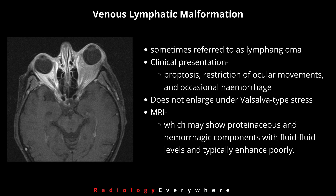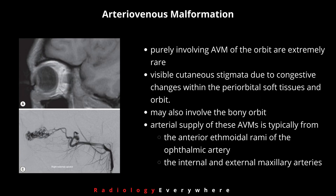The next vascular lesion is venous lymphatic malformation, sometimes referred to as lymphangioma, though it does not represent a neoplasm. It may manifest at birth or in early childhood, with typically slow or no growth. Clinically, proptosis, restriction of ocular movements, and occasional hemorrhages are seen. Unlike varices, venous lymphatic malformation does not enlarge under Valsalva-type stress maneuvers. MRI is the most sensitive method for characterization, showing proteinaceous and hemorrhagic components with fluid-fluid levels, and typically poor enhancement.